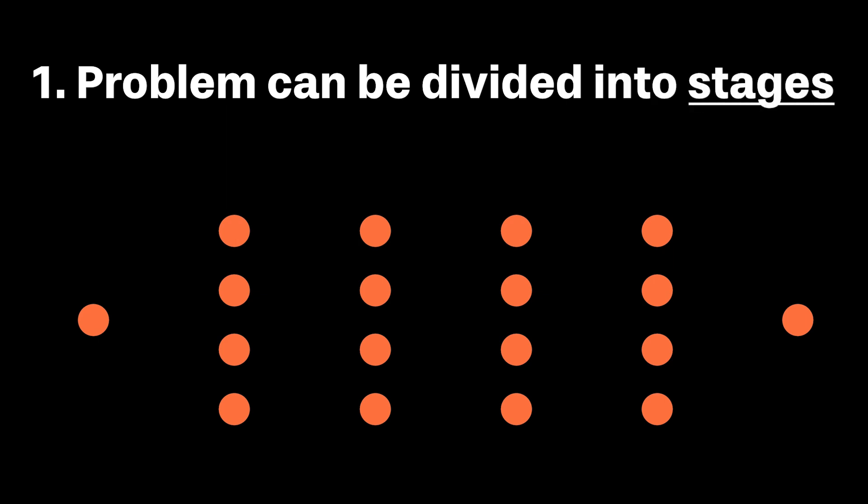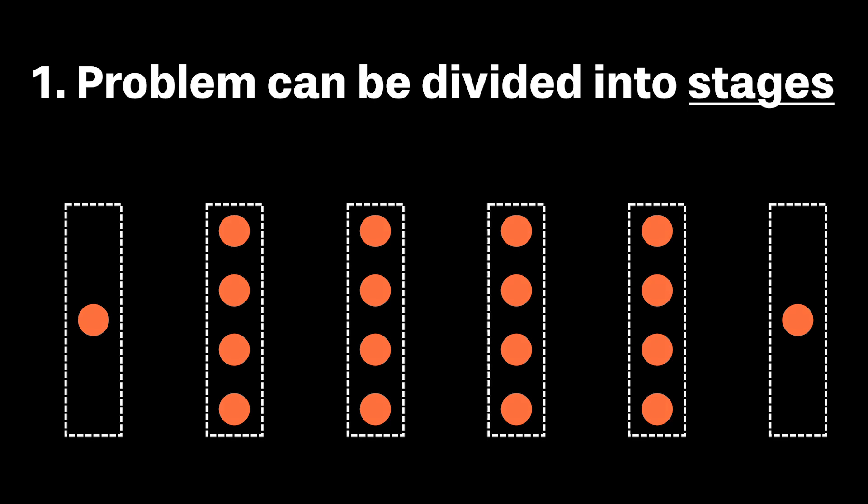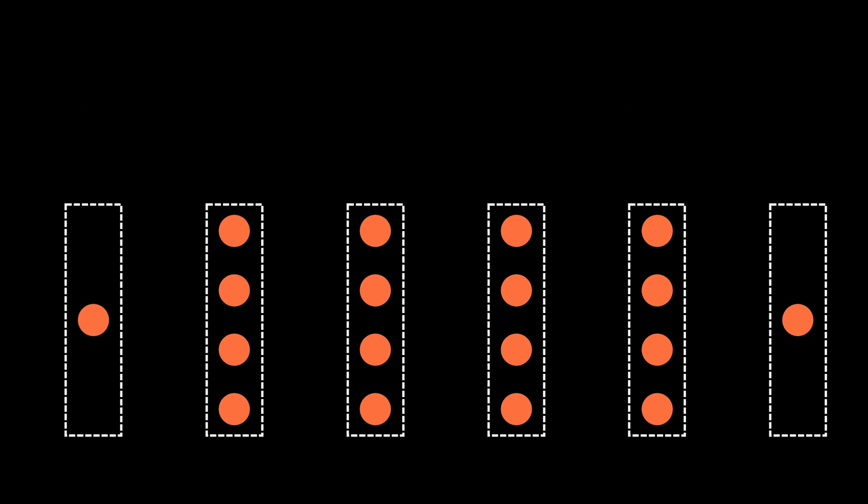First, we frequently apply dynamic programming when we can break down a decision-making process into stages. For our problem, we have six stages. The initial stage is our starting city. The last stage is our arrival location. And in between, there are four points where we need to make a decision around what to do next.